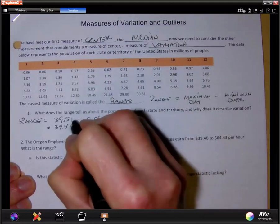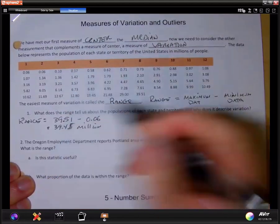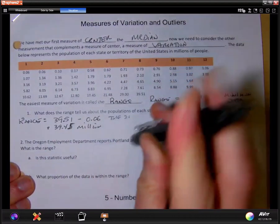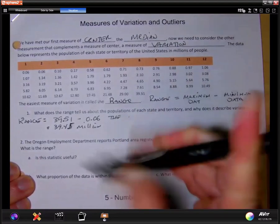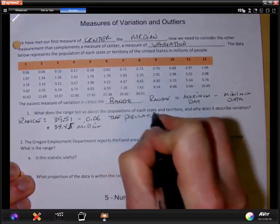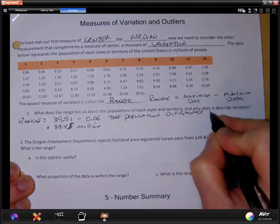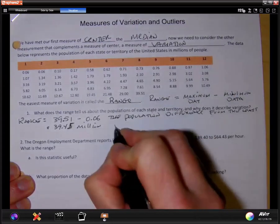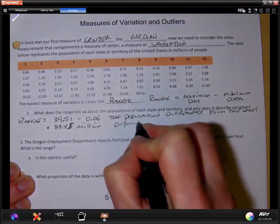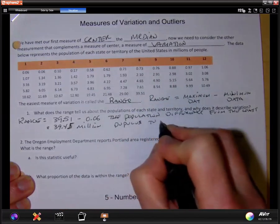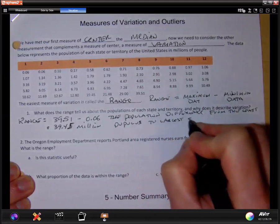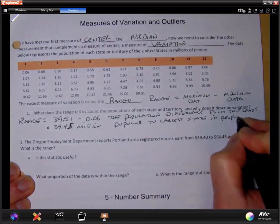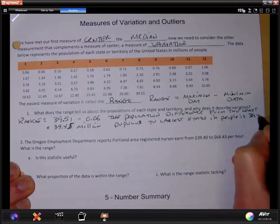That's a huge range. What does this tell us? It's a difference here. So the difference, the population difference, from the smallest to the highest population, from the least populous to the largest state in people is 39.45 million.